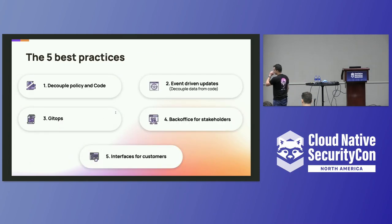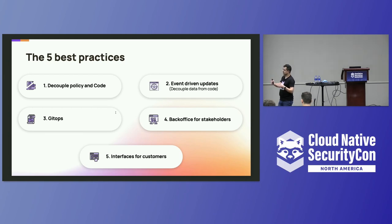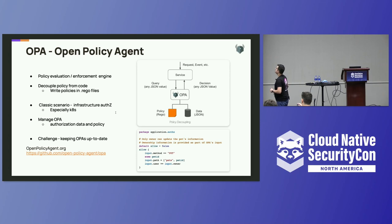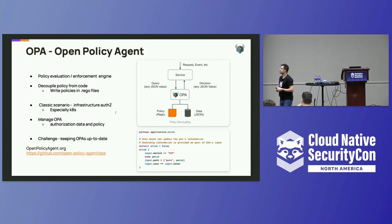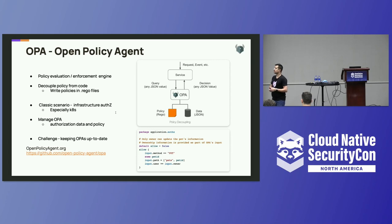Let's talk about the best practices. You want to decouple policy from code, you want to be able to respond to events in real-time, you want to have a GitOps workflow for policy, you want a back-office for stakeholders, and you want interfaces for customers. First: decoupling policy from code. A really cool project that most people know right now is OPA — the most adopted policy agent currently in the market. OPA lets you express policy as Rego code and data as JSON. You can create all the policy in the organization in Rego and just manage that.